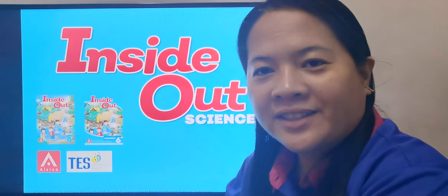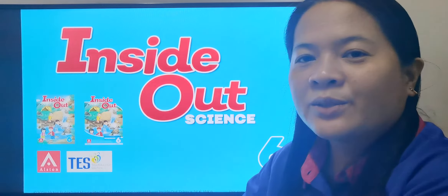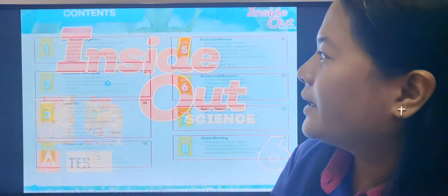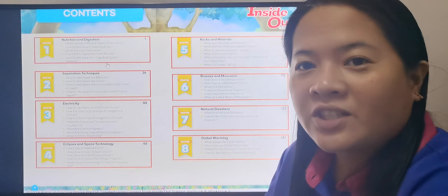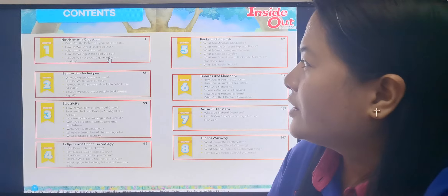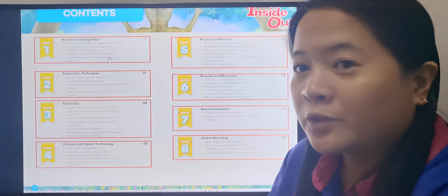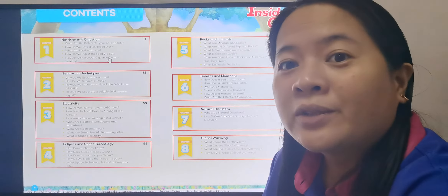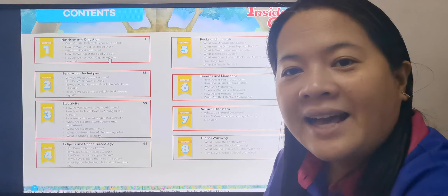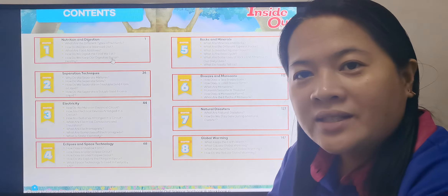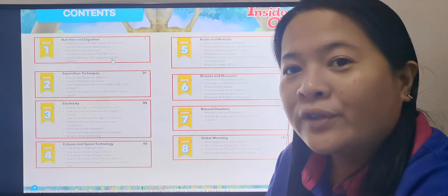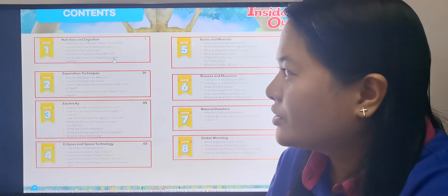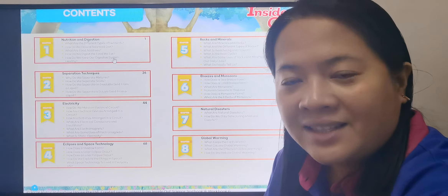Hi, welcome back to our class. For Topic 6, we're studying about nutrition and digestion. We already finished the different types of nutrients and how to have a balanced diet. Last week, we studied about BMI. So for today, we're going to review BMI and then we're going to study about food additives.